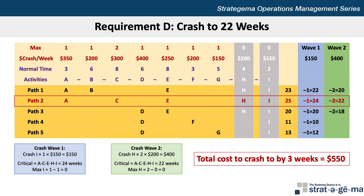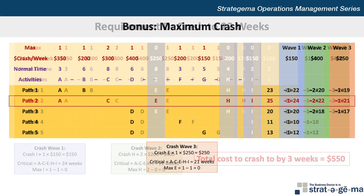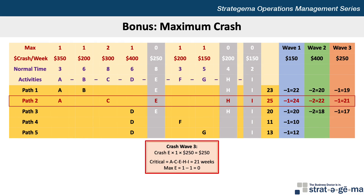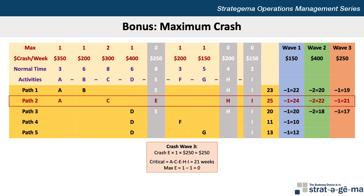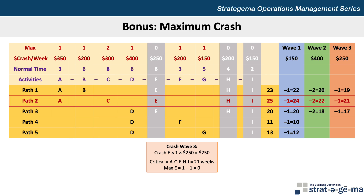Now you can stop here, or if you want a bonus challenge, let's see how far we can crash the project until we can't crash it anymore. We continue our same approach starting with the critical path A-C-E-H-I. But now we have only three activities to choose from: A, C, and E. The least expensive is E at $250, so for our third wave we crash activity E by one week at a cost of $250. We subtract one week from each path containing activity E, which are paths 1, 2, and 3, making their times 19, 21, and 17 weeks respectively. Activity E can no longer be crashed, so that's greyed out, and path 2 is still critical because it still takes the longest time to complete.